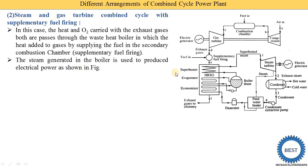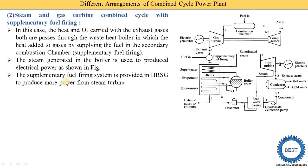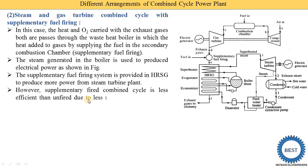The steam generated in the boiler is used to produce electric power. Steam is produced, supplied to the steam turbines, and then electricity is generated. The supplementary fuel firing system is provided in the HRSG to produce more power from the steam turbine. By adding heat energy to the exhaust gases, more steam is produced and electricity production is increased. However, the supplementary fired combined cycle is less efficient than the unfired cycle due to less utilization of waste and supplementary heat.